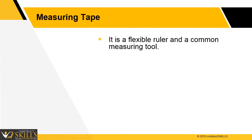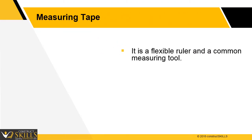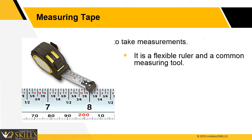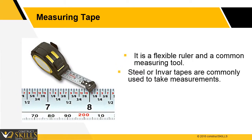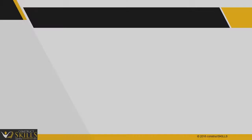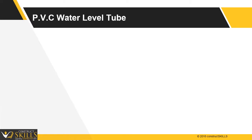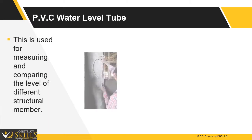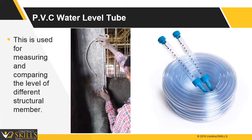Measuring tape: it is a flexible ruler and a common measuring tool. Steel or inward tapes are commonly used to take measurements. PVC water level tube: this is used for measuring and comparing the level of different structural members.